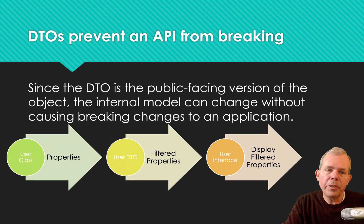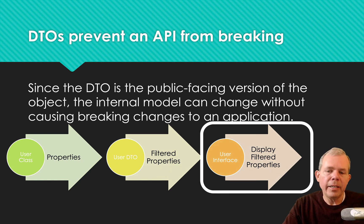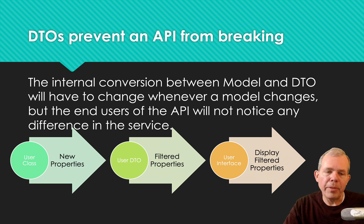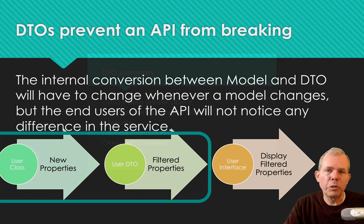Another reason to use a DTO is to prevent your API from breaking. If you have a public API with a million customers attached to it and you decide to change something, you don't want to make a million people upgrade their application. You create a front-end DTO that is static, giving you the freedom to change things on the back end. The public-facing API stays stable, internal conversion can change, and new properties of your user class can be modified — but the user interface stays the same. The back end is your domain, and the front end can remain static, keeping your users happy.